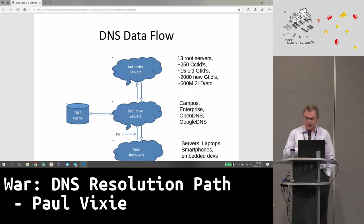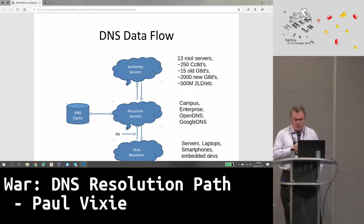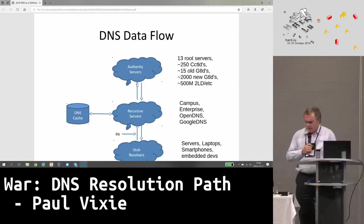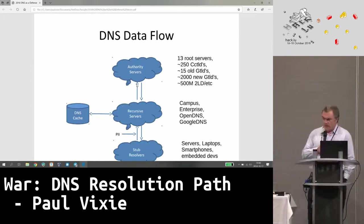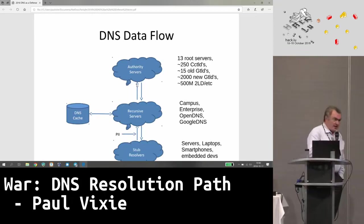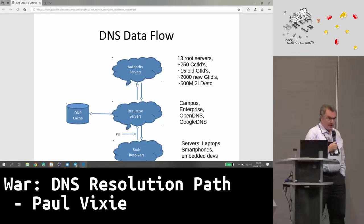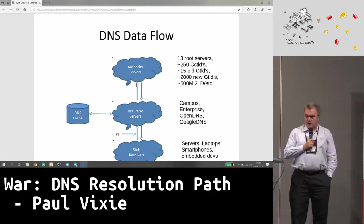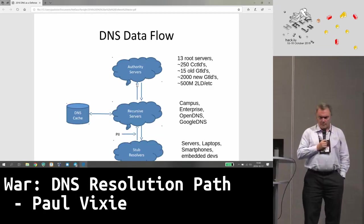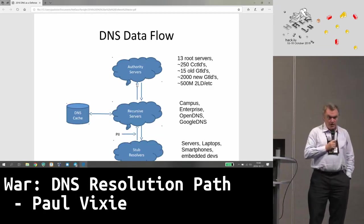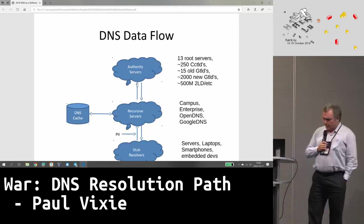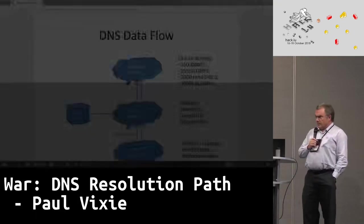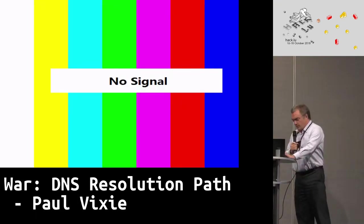So what's the war? The war is that the people who run these recursive servers have been messing with you. They have been sending fake positive answers instead of negative answers in order to get you to look at a webpage that has ads on it when you have otherwise made a typographical error. And this is how low-end ISPs, with very thin margins, have been somehow making payroll all these years. And the people at the IETF and especially the people at the Mozilla Foundation are pissed off about this and they are finding a way to bypass those people because they can't be trusted.